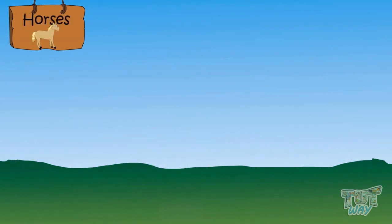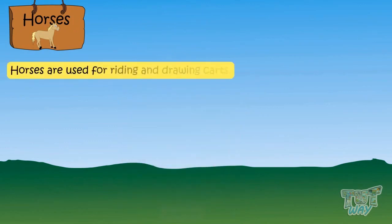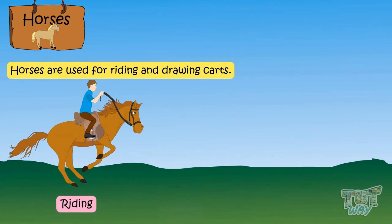Horses. Horses are kept in stables. This is a picture of a stable. Horses are used for riding and drawing carts.